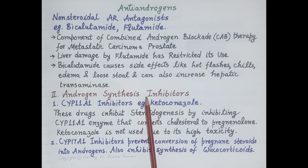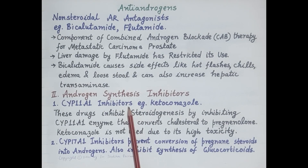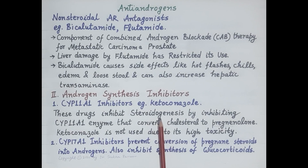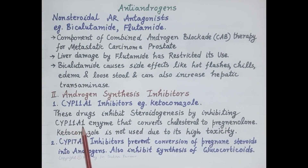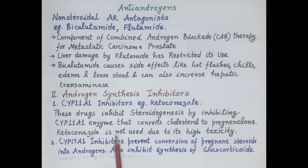The second category of anti-androgens is androgen synthesis inhibitors. These agents reduce synthesis of androgens — that is, they inhibit synthesis of testosterone and dihydrotestosterone. Testosterone is a steroidal hormone synthesized from cholesterol. CYP11A1 inhibitors, for example ketoconazole, inhibit steroidogenesis by inhibiting the CYP11A1 enzyme that converts cholesterol to pregnenolone, thereby inhibiting synthesis of testosterone. Ketoconazole is not widely used due to high toxicity.